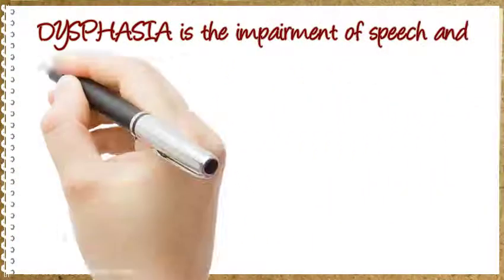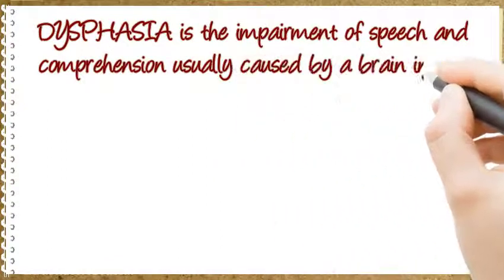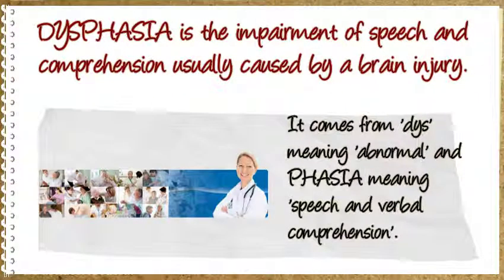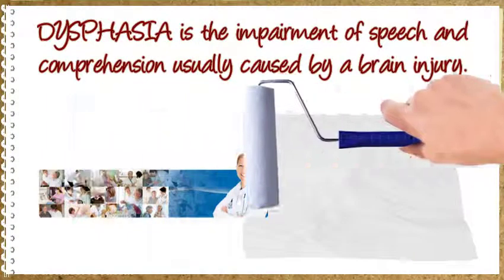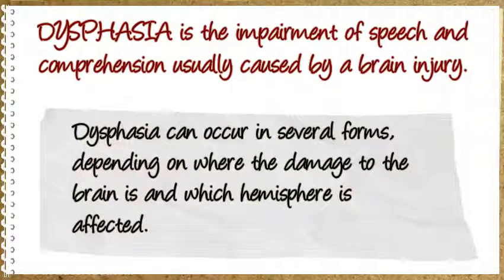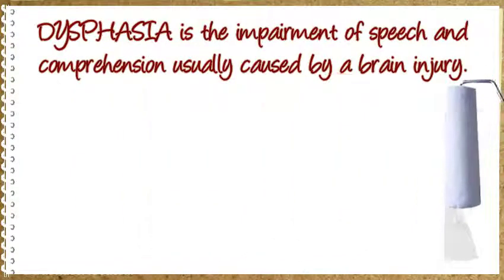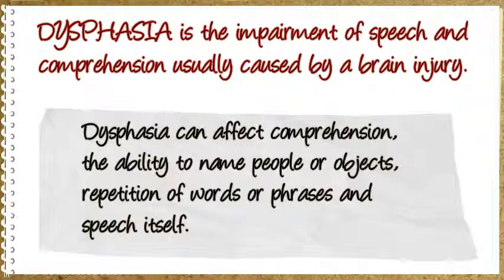Dysphasia is the impairment of speech and comprehension, usually caused by a brain injury. It comes from dys meaning abnormal and phagia meaning speech and verbal comprehension. Dysphasia can occur in several forms depending on where the damage to the brain is and which hemisphere is affected. Dysphasia can affect comprehension, the ability to name people or objects, repetition of words or phrases, and speech itself.